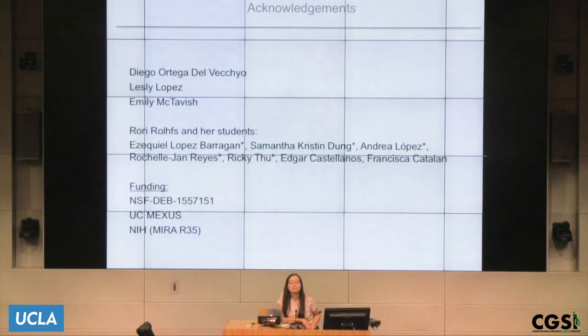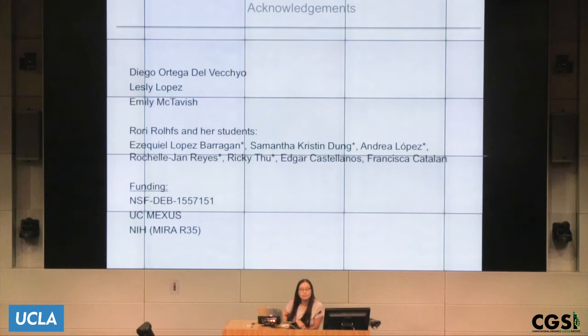I have a question about the D-prime statistic. Have you tried looking at using introgression from modern humans to early and late archaic humans? No, I don't know if that would work, but I haven't done that.